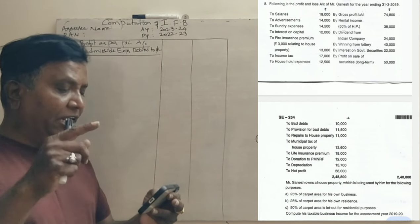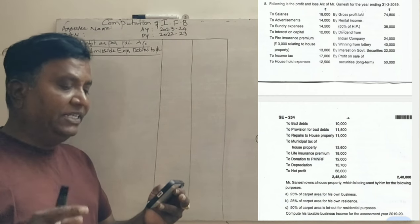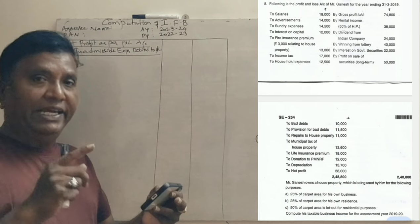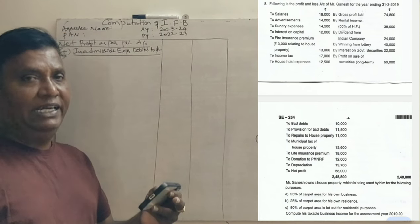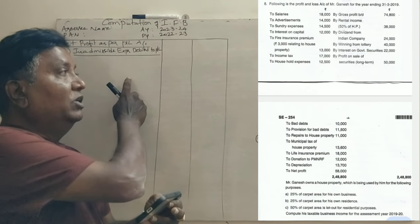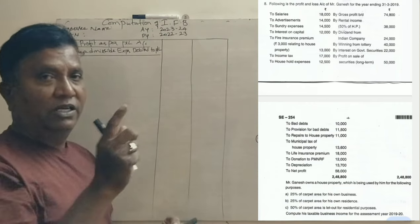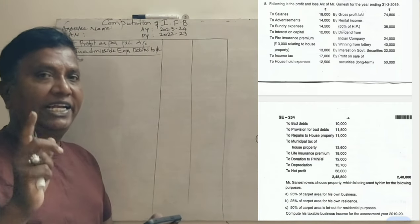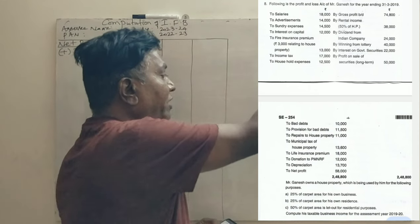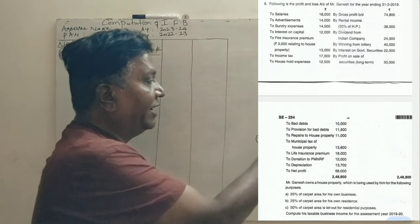The debit side will be all expenses and the credit side will be all income. We need to identify which are inadmissible incomes and inadmissible expenses. We also have admissible expenses not recorded and admissible incomes not recorded.